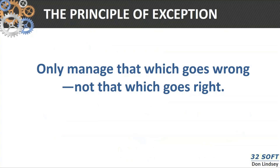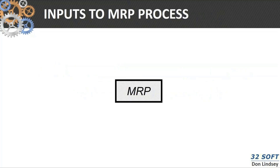MRP is based on a principle that we refer to as the principle of exception. We only manage that which goes wrong, not that which goes right. If you have 10,000 items in your MRP database and only 100 are what is called out of phase with the plan, then MRP is only going to direct you at those 100 parts. It's the principle of exception that we're going to see in MRP.